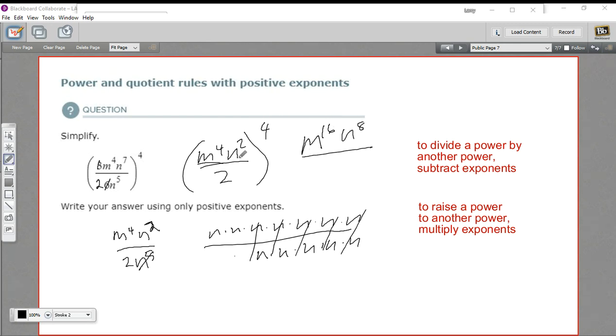And then I have to apply this fourth power to the bottom here. What's two to the fourth? Well, that's two times two times two times two, and that's going to be 16. So my final answer here is m to the sixteenth n to the eighth over 16. So that is a little bit of work with quotient and power rules with exponents.